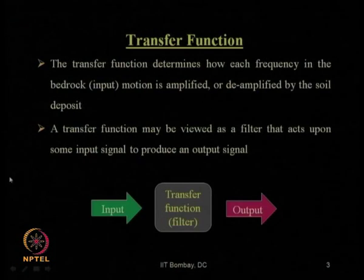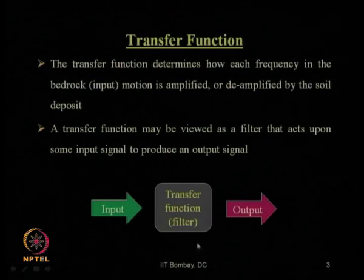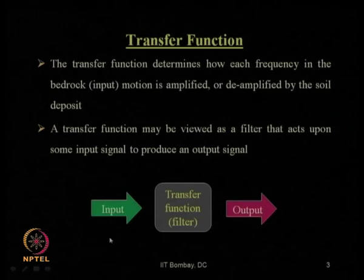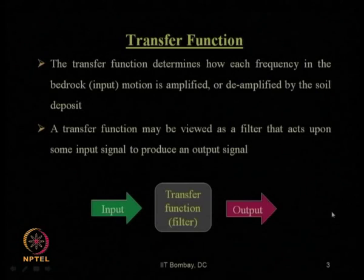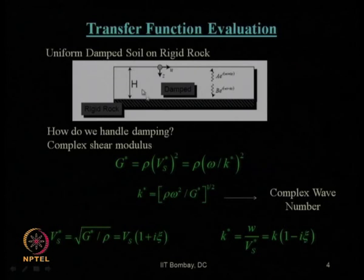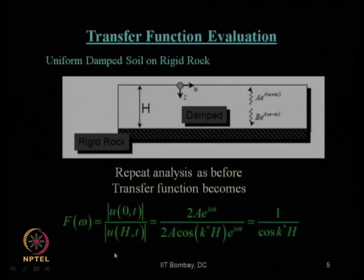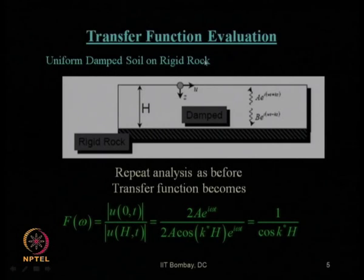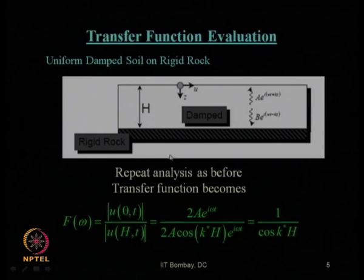Let us have a quick recap of what we have learnt in our previous lecture. We started defining what is called a transfer function — it is nothing but a filter or a multiplier which changes input ground motion to an output at another level. We have seen various cases of how to estimate the transfer function for uniform damped soil, which is expressed as the ratio of the displacement function at ground to that at the rock level — that is, the interface between the soil and rock.